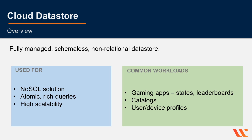Google Cloud Datastore is a fully managed, schemaless, non-relational datastore. It's a NoSQL solution that provides a rich set of query capabilities, supports atomic transactions, and automatically scales up and down in response to load. It can scale to support an application with a thousand users or 10 million users with no code changes. This is great for mobile games, which save state and leaderboards for millions of users instantly with very low latency.